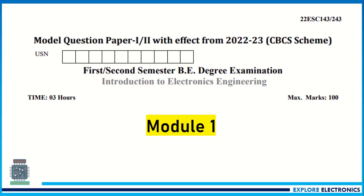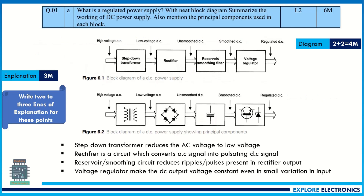Let's solve each and every question from Module 1. The first question is on DC power supply. If you see the previous subject Basic Electronics and Communication Engineering question paper, this question was asked in the exam and also in the model question paper, so this question is very important for the examination.